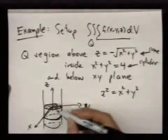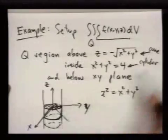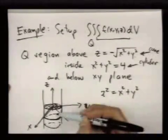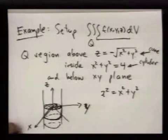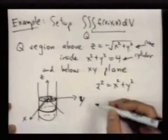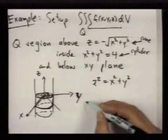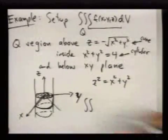z goes between its value on the cone and z = 0. So maybe I can squeeze that in here. I'll have two outer integrals.